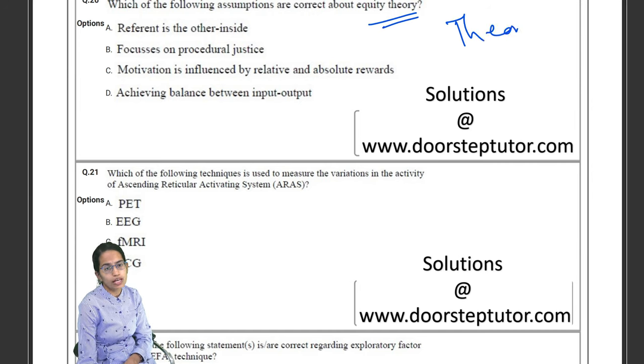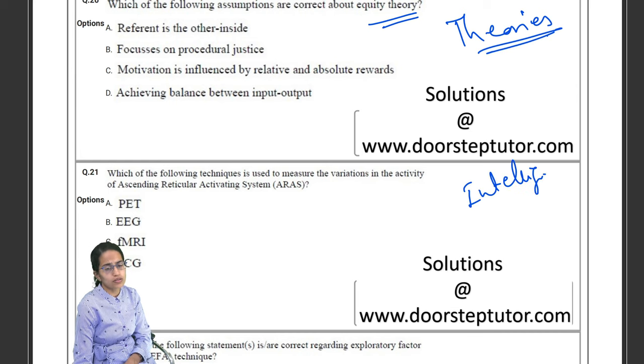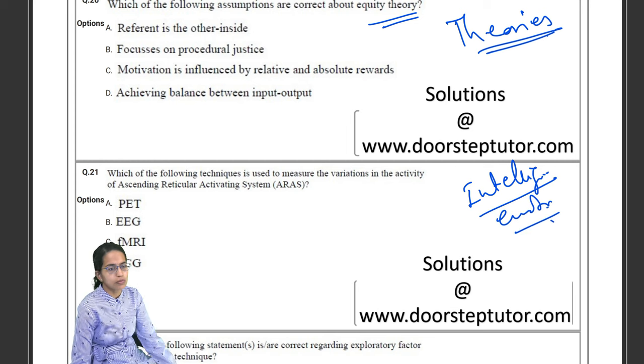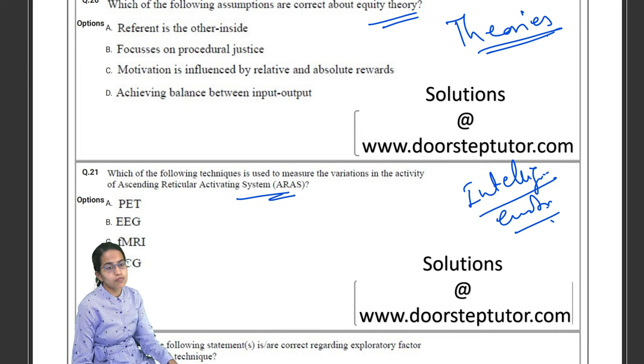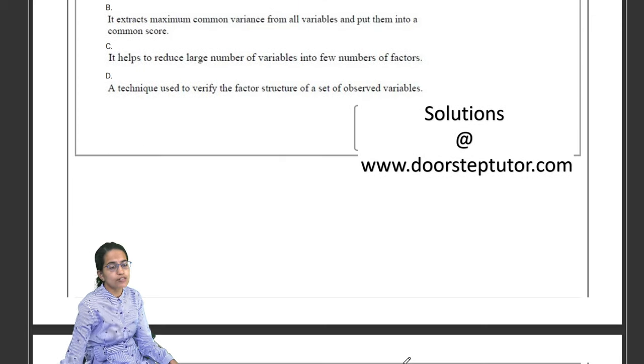Another question was there from statistics, questions again from theories of motivation. So theories of motivation I would recommend cover them carefully. In intelligence you have to cover the Thurston's concept and the emotional intelligence. Last year also there was question on emotional intelligence, again important. The reticular activating system, again an important section.